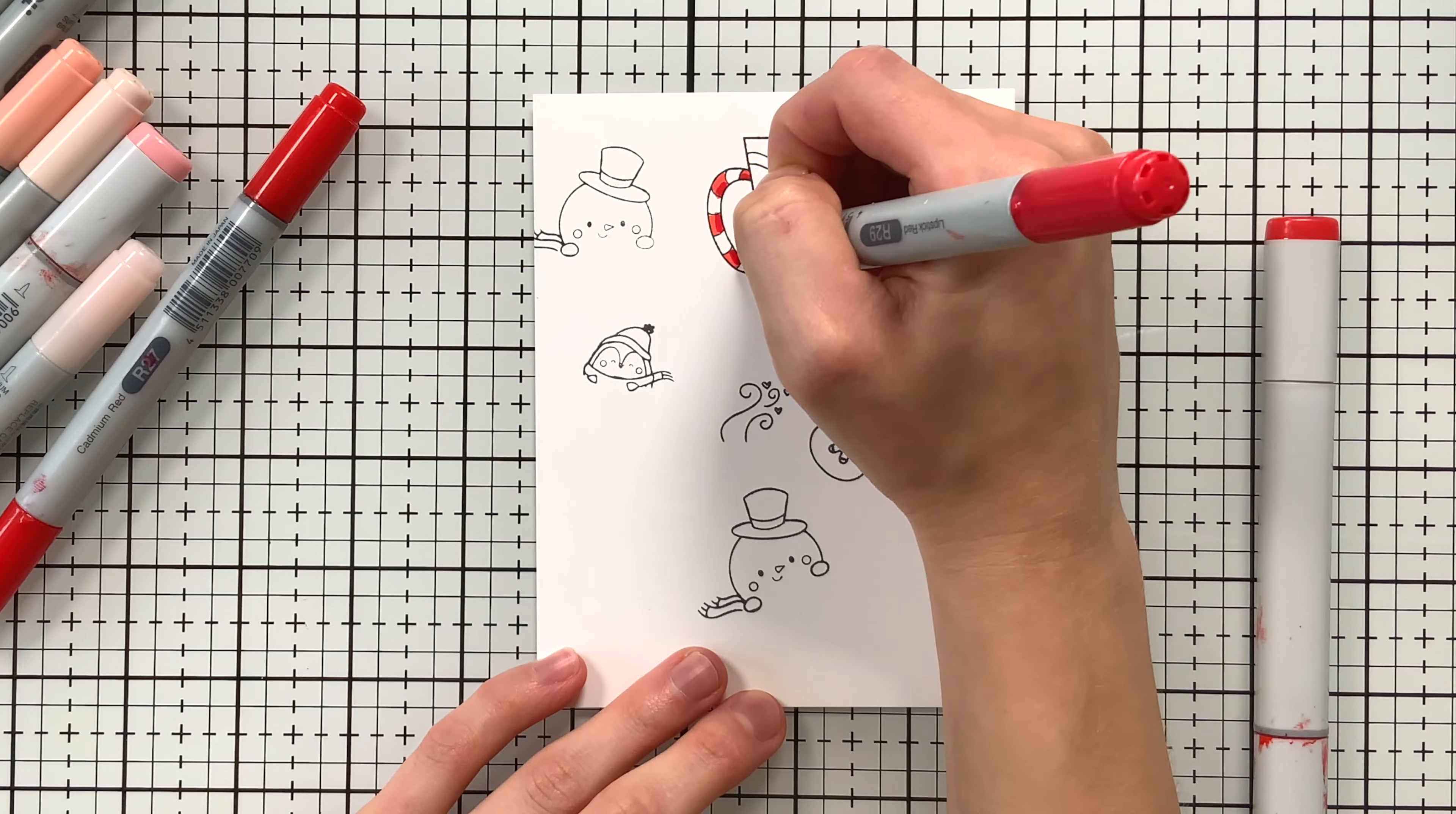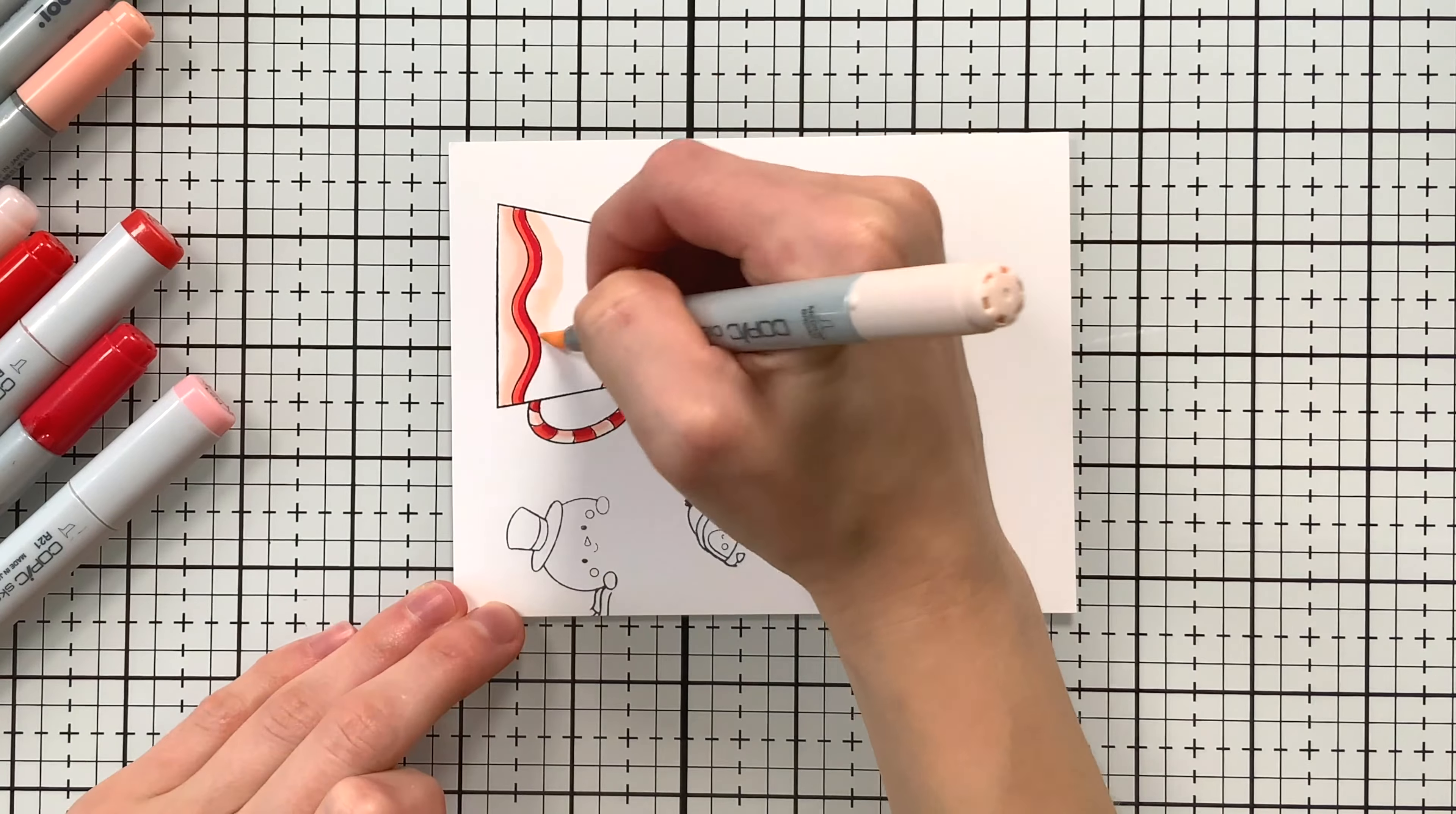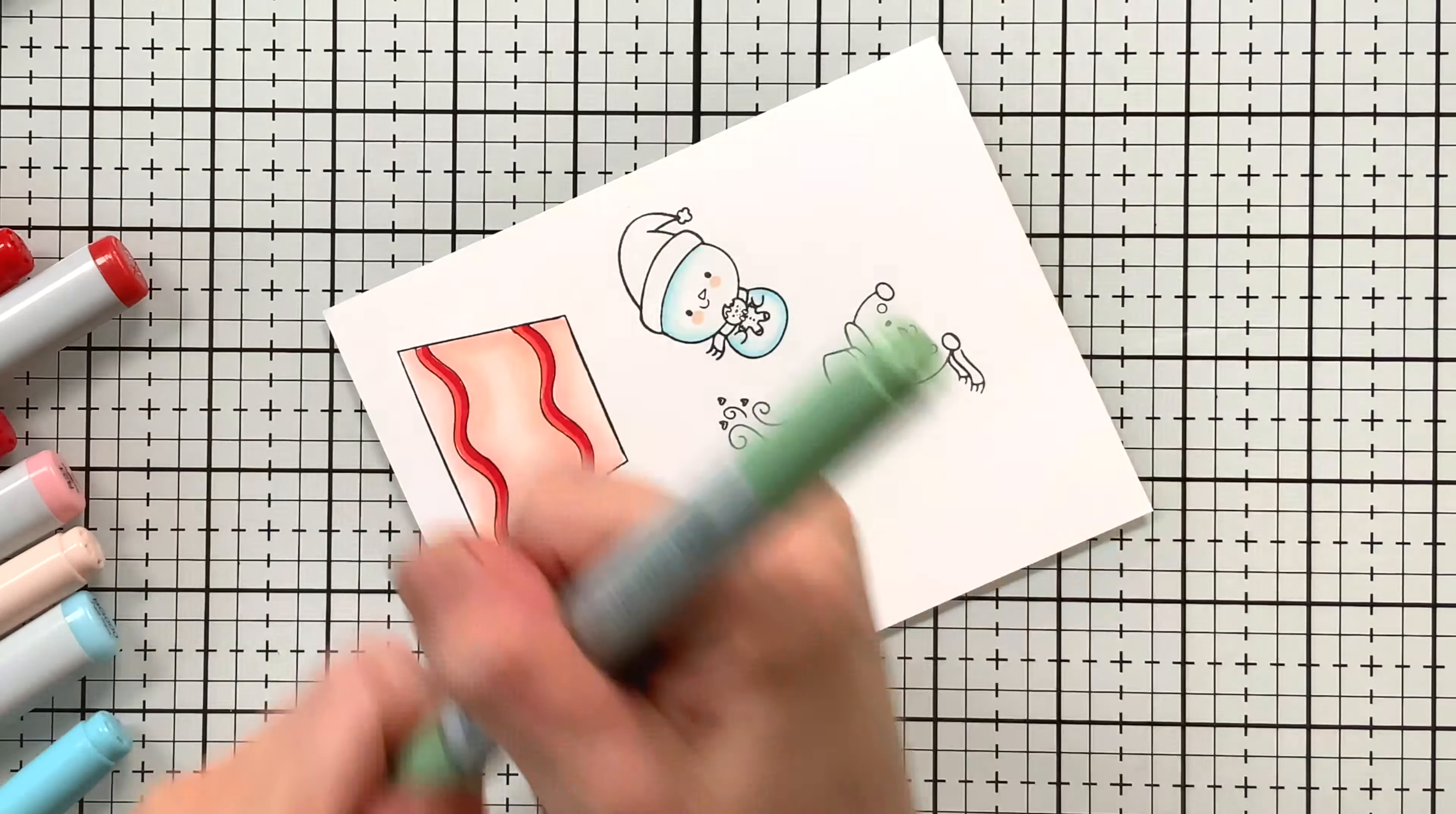For the coloring on my card project, I am using some fun Christmas shades. I do have all the Copic colors that I used today linked below in the video description and also on my blog. I particularly liked the color combination of R20s that I used here for the coffee mug. I used the darker reds for the stripes to create a candy effect, and then I have the lighter color for the main part of the cup. For the snowman, I used a light blue to add some shading and then just left it really simple like that.